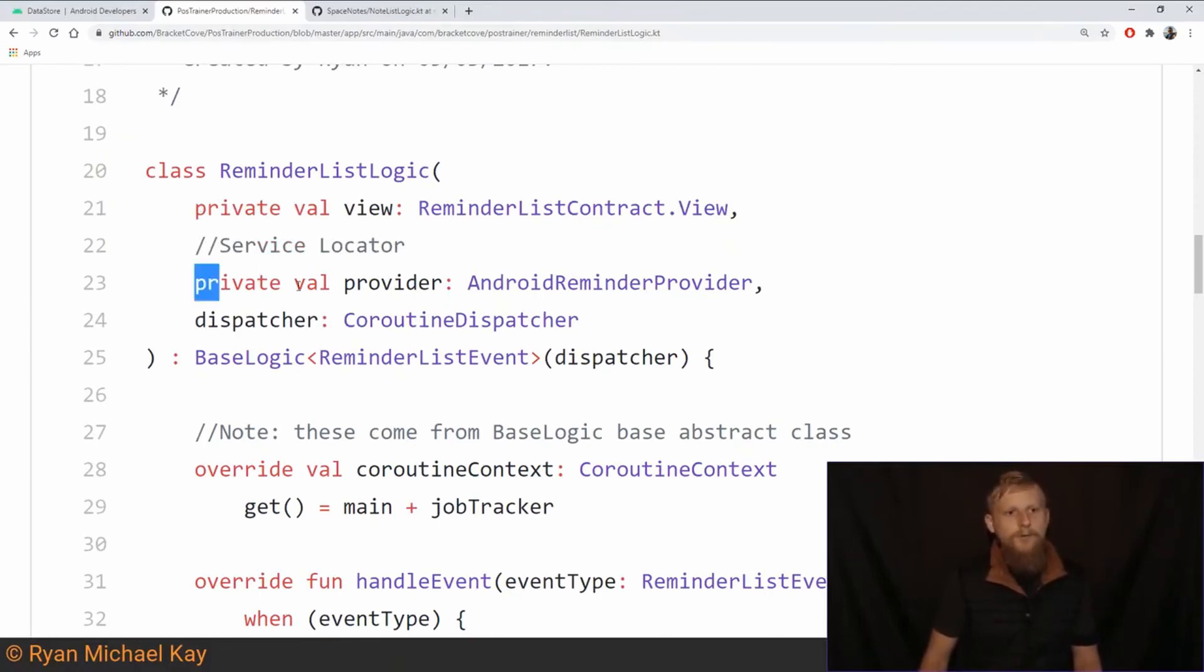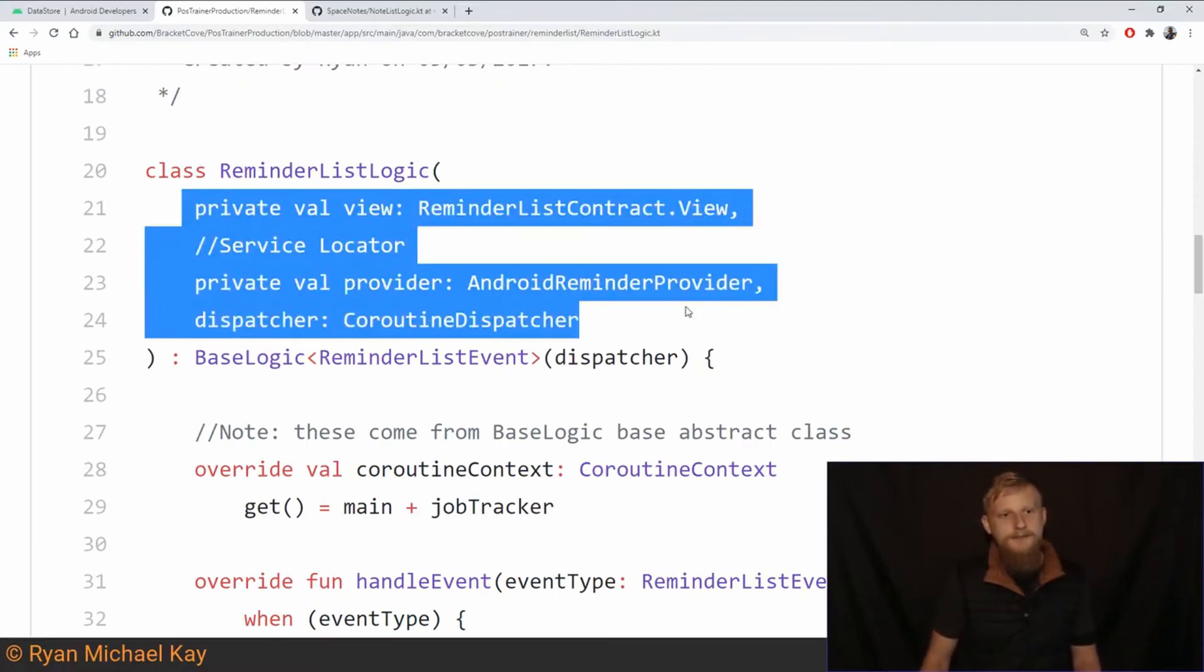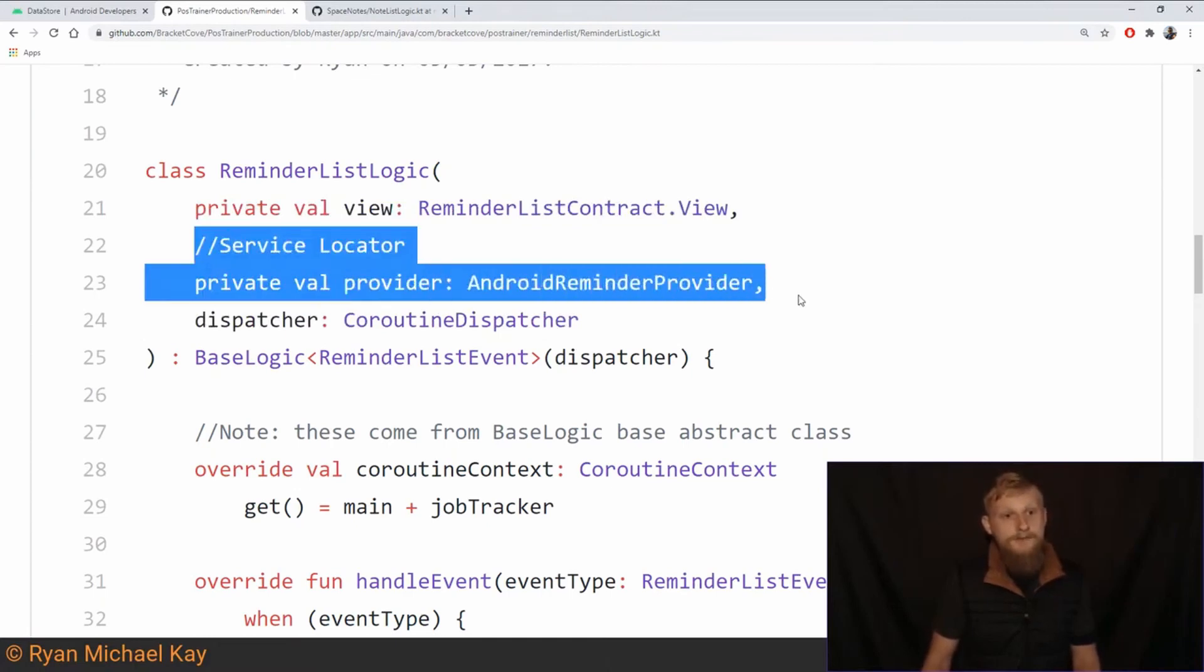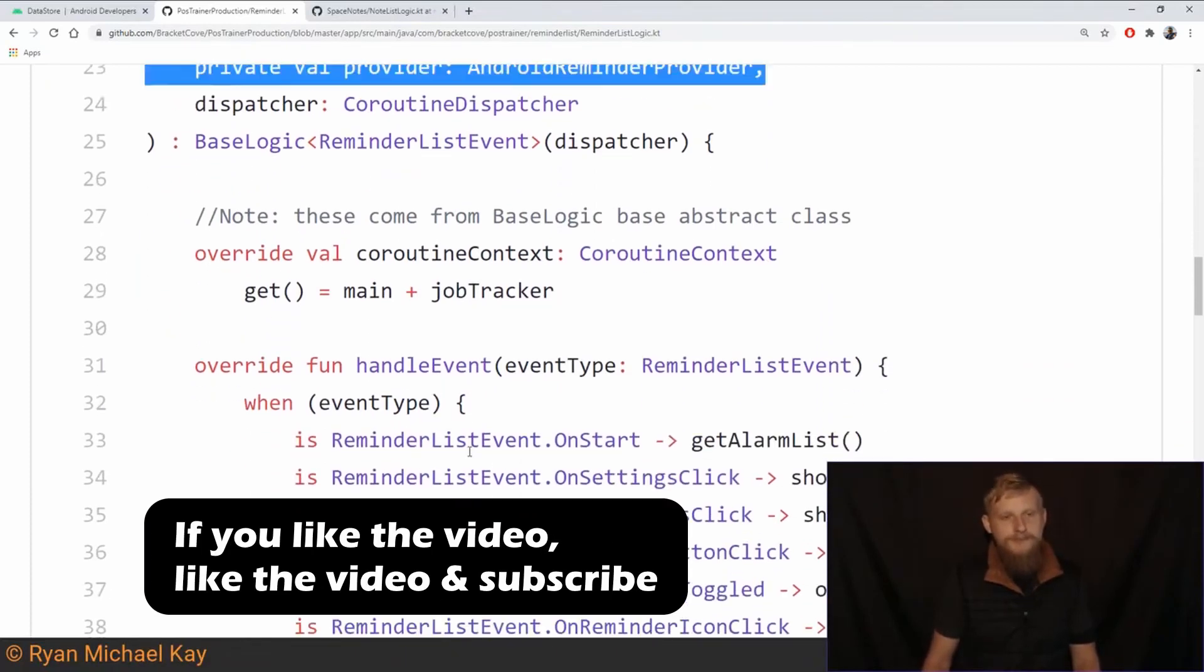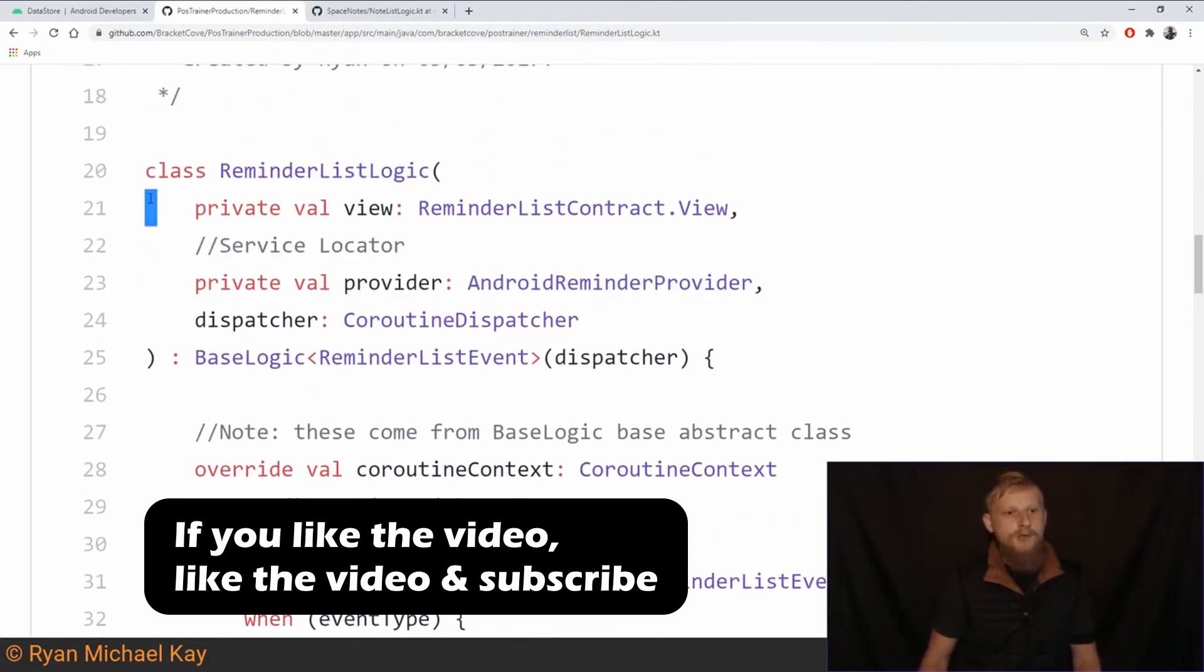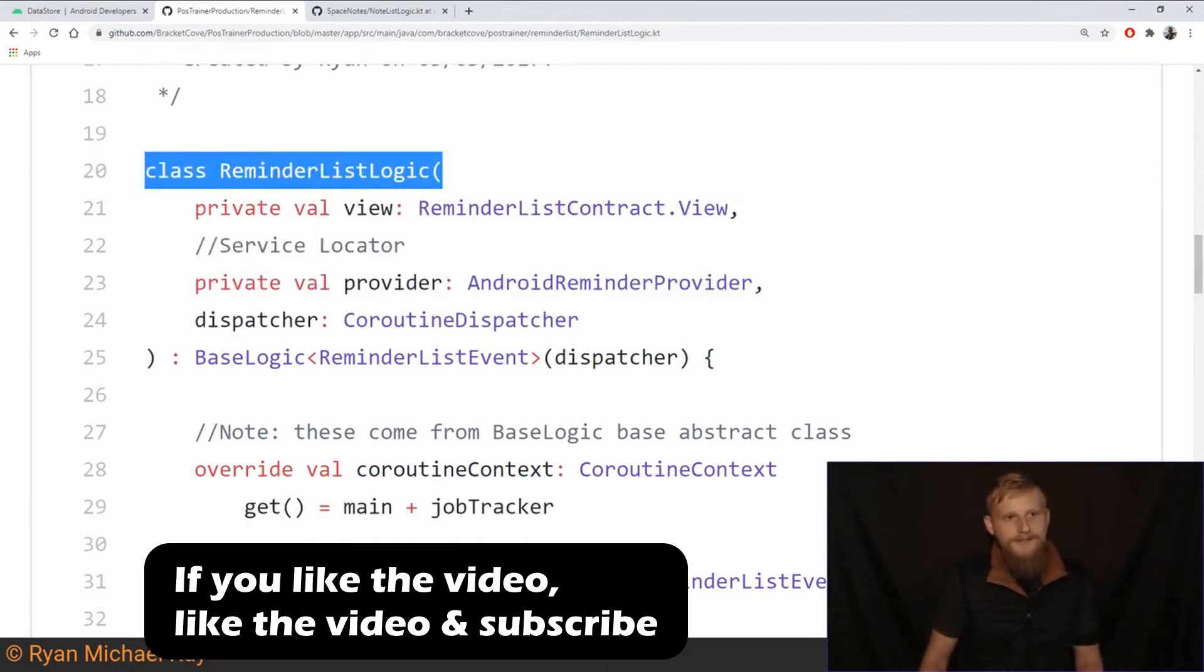So why are we doing this? We need to understand dependency and constructor injection does not mean you're not using a service locator. You would never build your service locator in the class that uses the service locator. You don't want the class that uses these things to build these things.